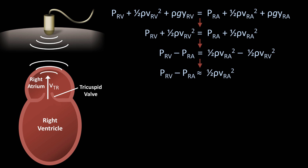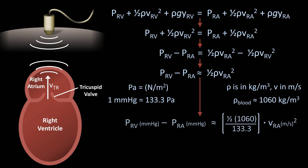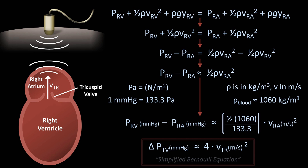This leaves: pressure RV minus pressure RA is approximately equal to ½ρV_RA². Using known relationships — pressure in pascals (N/m²), density in kg/m³, velocity in m/s — and noting that 1 mmHg equals 133.3 pascals and the density of blood is about 1,060 kg/m³, we find the pressure gradient across the tricuspid valve in mmHg is approximately equal to 4 times the velocity of the tricuspid regurgitant jet in m/s squared. This simplified version of Bernoulli is called the simplified Bernoulli equation.